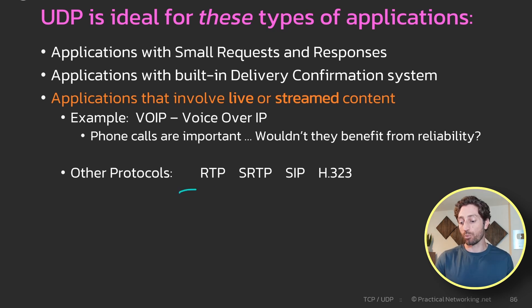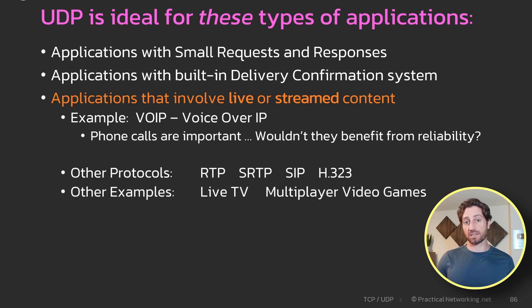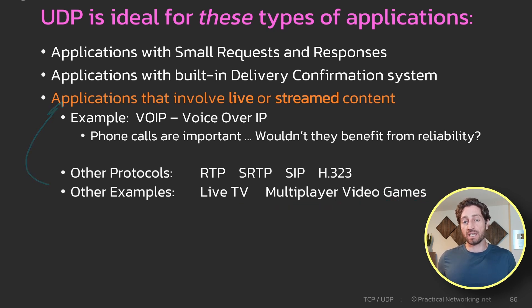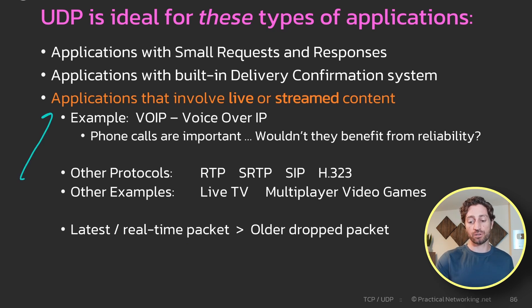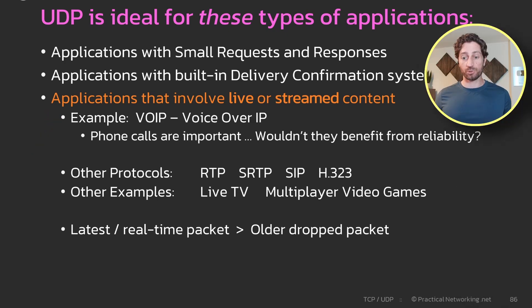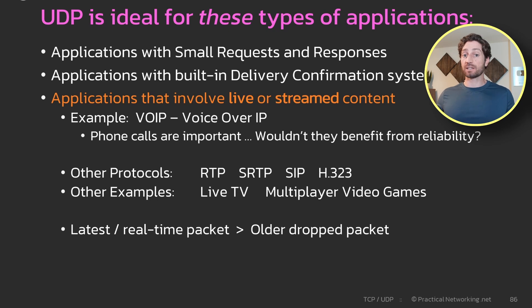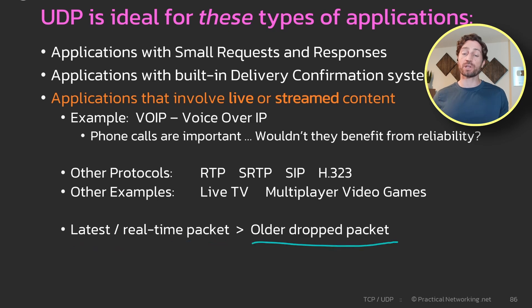Beyond just protocols, most software we use today doesn't simply use one network protocol. Conceptually this third category might be better described as: anything that involves live TV or multiplayer games. Really, any situation where the latest real-time packet is more important than an older dropped packet falls into this third category. For example, if you're watching the World Cup, the Super Bowl, or playing a competitive multiplayer video game, inevitably you'll have a dropped packet — and while that sucks, you'd much rather focus on the most recent events than figure out what happened to that one dropped packet.